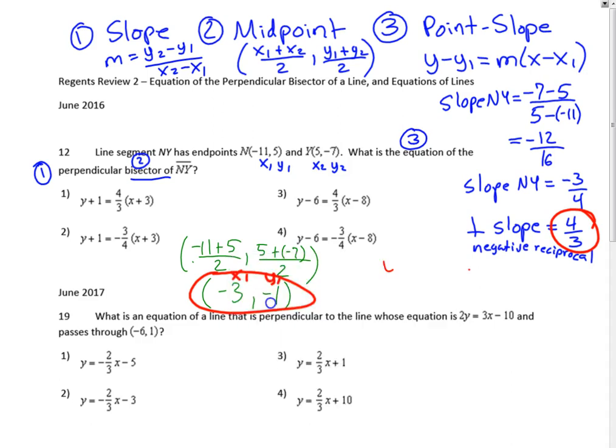Using y - y1 = m(x - x1), we get y - (-1) = (4/3)(x - (-3)). The negative 1 comes from our midpoint. So y + 1 = (4/3)(x + 3). That is choice number 1. That's probably the most work version of it.